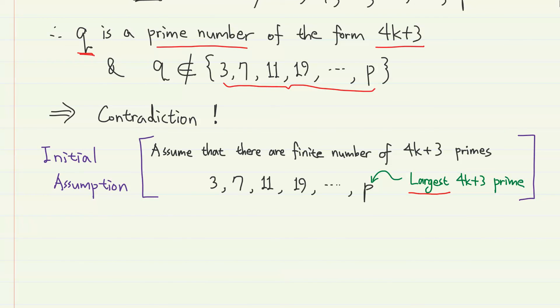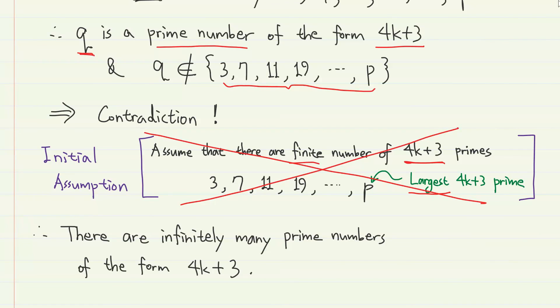Therefore both case 1 and case 2 lead to contradiction, meaning that our very first assumption, that there are finite number of prime numbers of the form 4k plus 3, cannot be true. Therefore there exist infinitely many prime numbers of the form 4k plus 3.